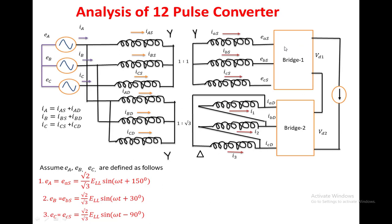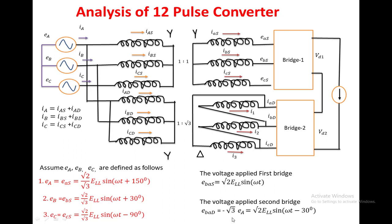For converter 1, we are applying the voltage e_ba_s, which is the line-to-line voltage equal to root 2 times E_LL times sin(ωt). For converter 2, the voltage e_ab_d equals root 2 times E_LL times sin(ωt − 30°). So whatever voltage is applied to converter 2 will be lagging the converter 1 voltage by 30 degrees.